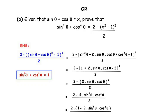Using the identity sin²θ + cos²θ = 1, the bracket simplifies: 1 + 2 sin θ cos θ − 1, and the +1 and −1 cancel to give 0. So we are left with 2 minus [2 sin θ cos θ]² all over 2.